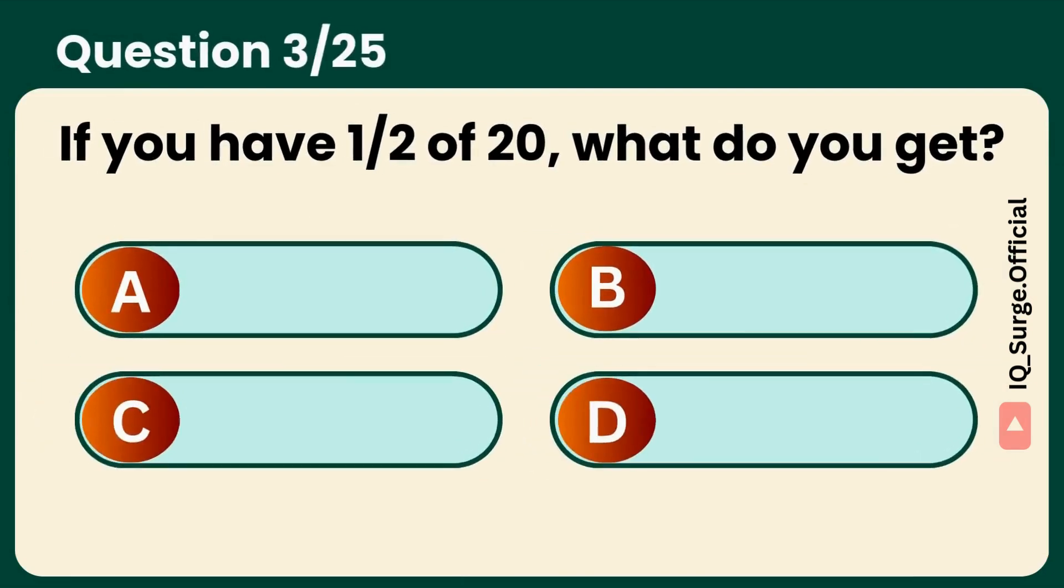If you have half of 20, what do you get? Answer: 10. Half the number, double the confidence.